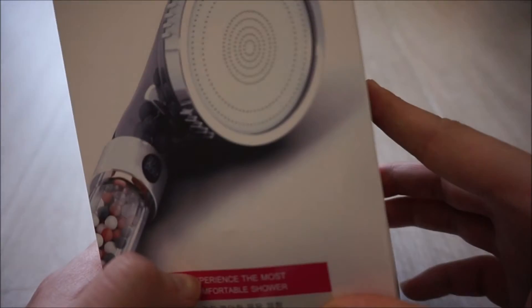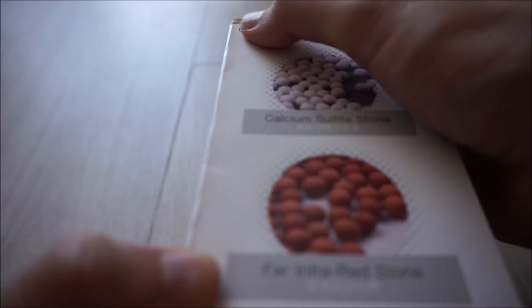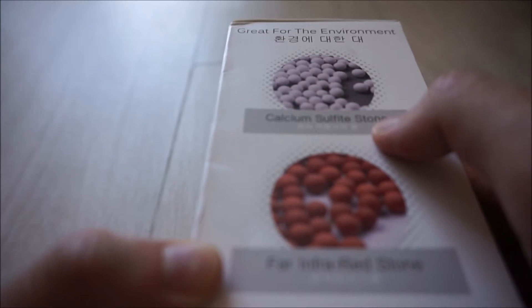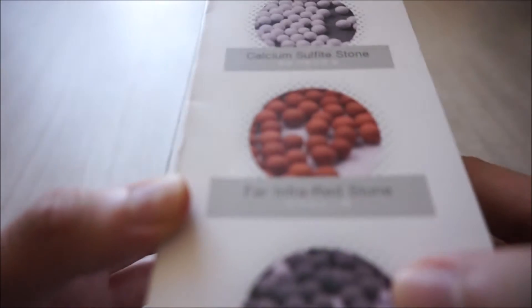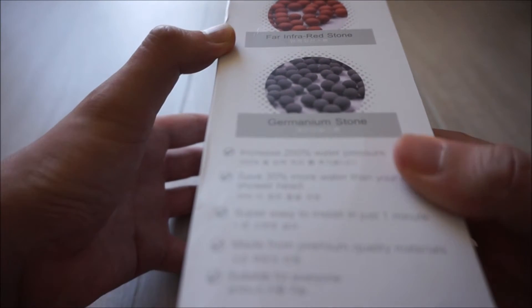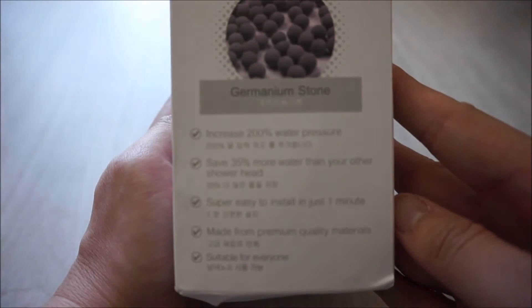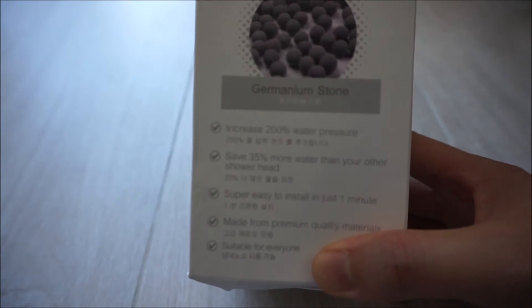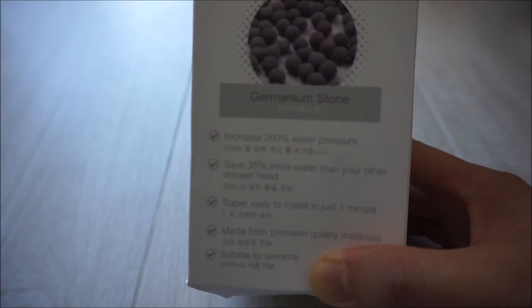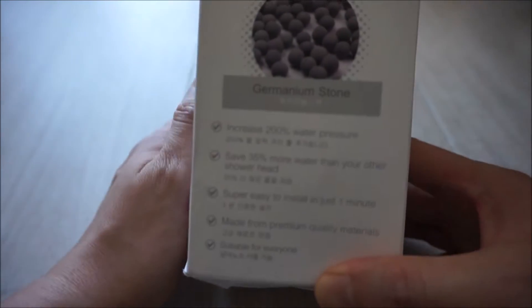Let's take a look at the benefits. Here they say great for the environment, calcium sulfite stone, far infrared stone, germanium stone. Increase 200% water pressure. Save 35% more. Easy to install. One minute. Made from premium quality material and is for everyone.